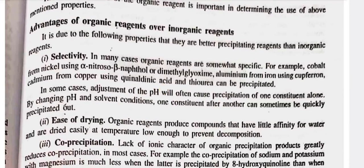Advantages of organic reagents over inorganic reagents: It is due to the following properties that they are better precipitating reagents than inorganic reagents. First, selectivity — in many cases, organic reagents are somewhat specific. For example, cobalt from nickel using alpha-nitroso-beta-naphthol or dimethylglyoxime, aluminium from iron using cupheron, cadmium from copper using quinaldine acid and thiourea can be precipitated. In some cases, adjustment of the pH will often cause precipitation of one constituent alone. By changing pH and solvent conditions, one constituent after another can sometimes be quickly precipitated out.